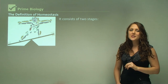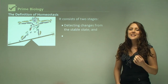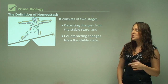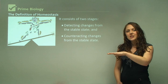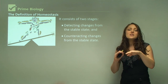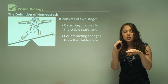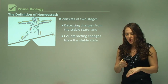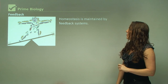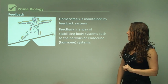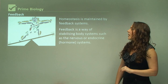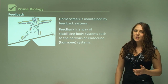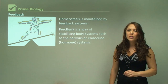Homeostasis consists of two stages: detecting changes from the stable state and counteracting those changes to bring the body back to normal. It's a feedback mechanism. Homeostasis is maintained by feedback systems, which stabilize body systems such as the nervous or endocrine systems. The endocrine system is where hormones are released.